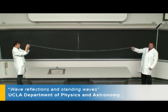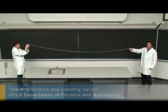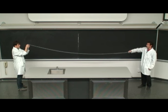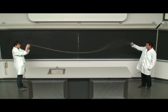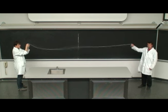Standing waves are a result of reflection and interference. As I send a single pulse down to this fixed end, you can see that it reflects upside down on itself.